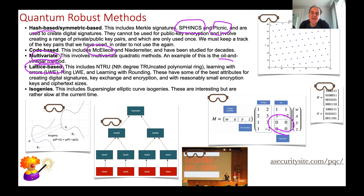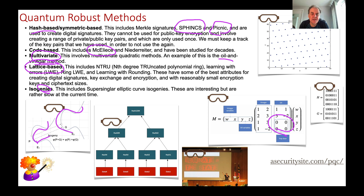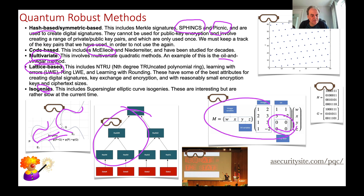Lattice-based methods have been shown to produce fairly small digital signature sizes and are also effective for key exchange. The last area is isogenies, which use elliptic curves to map from one elliptic curve to the next.